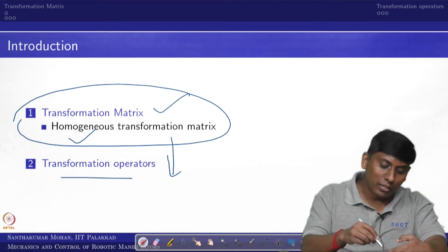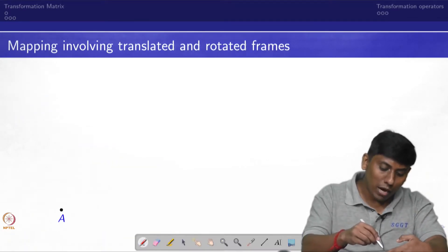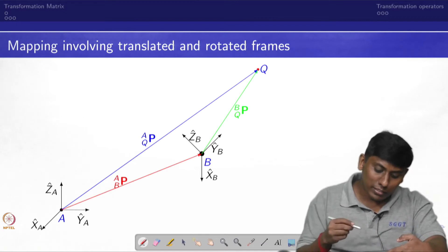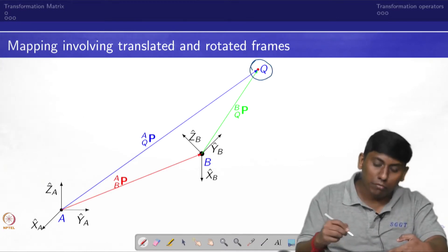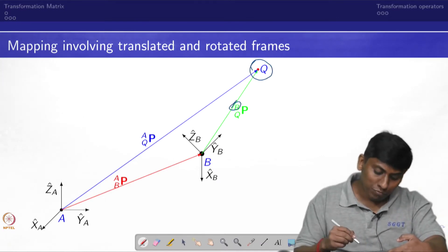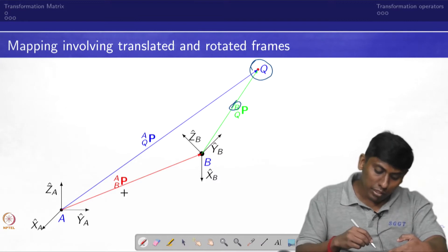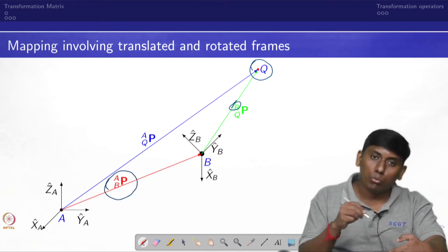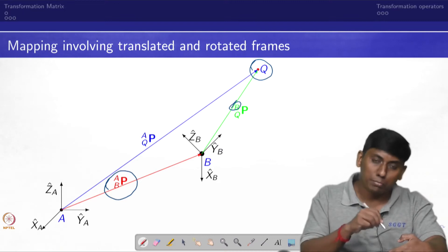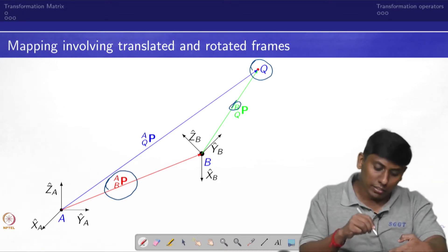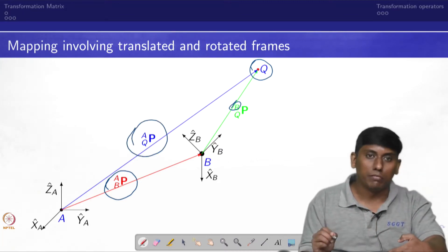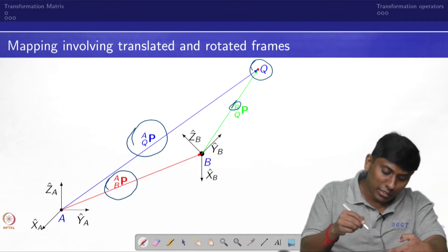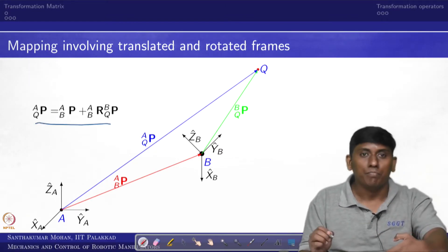We will recall where we stopped. We have seen that there is a position vector of Q with respect to B. If the positional information of B with respect to A and the orientation information of B with respect to A is given, we can find this position vector. This is what we have seen in the previous lecture.